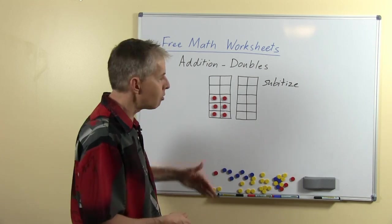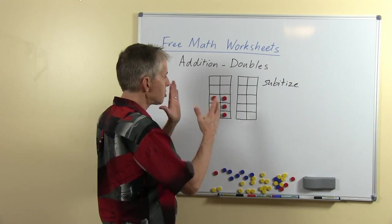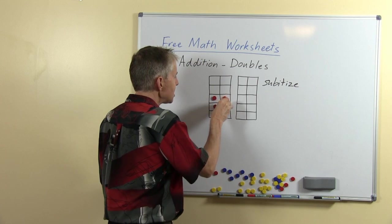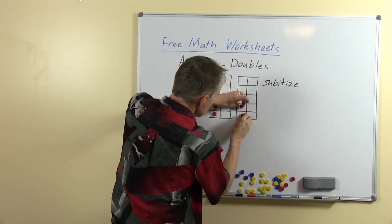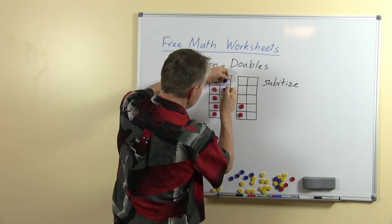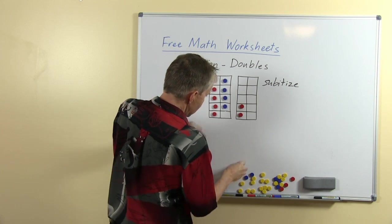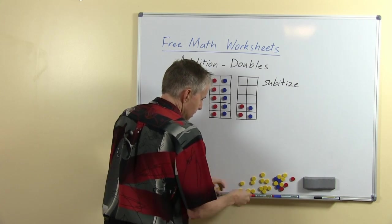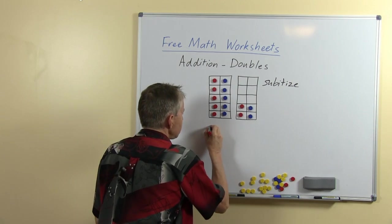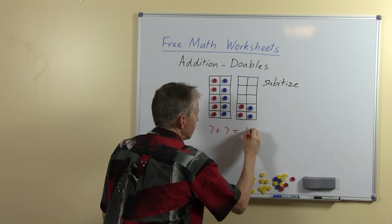For a number less than 10 or up to 10 we can quite easily show it with a single 10 frame. Let's see what happens if we go beyond the 10. So I'm going to use two colors now and we're going to look at double seven. Here we have 7 plus 7 and the answer is 14.